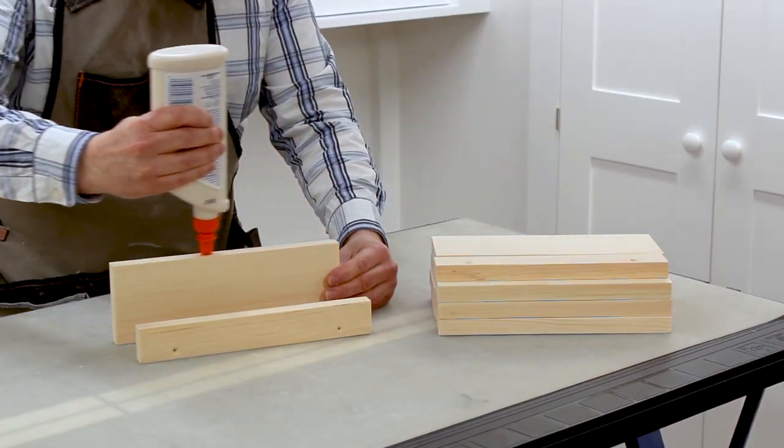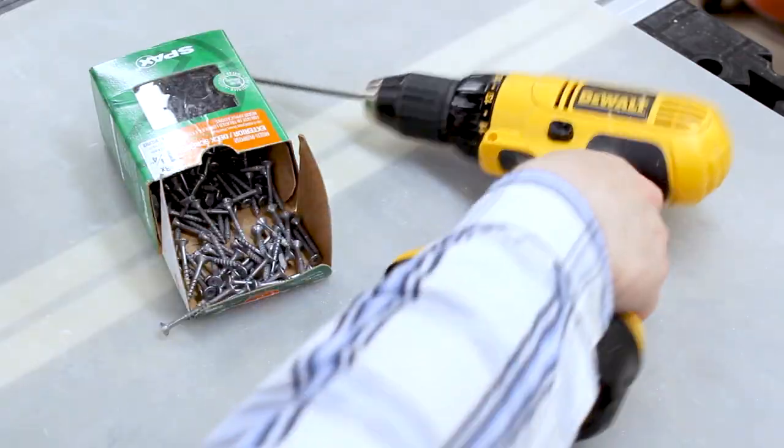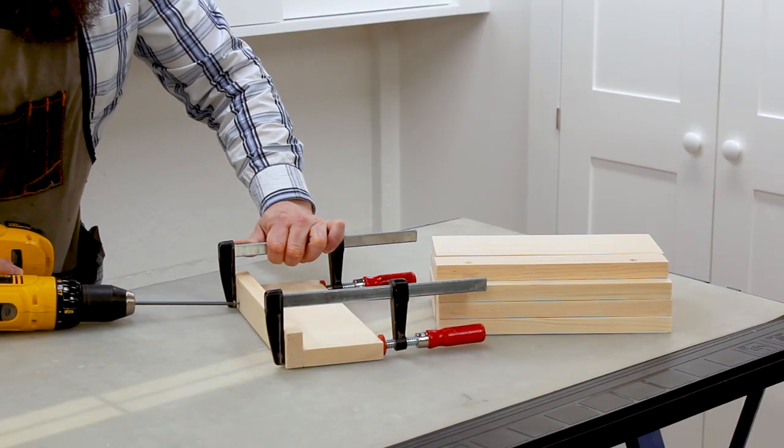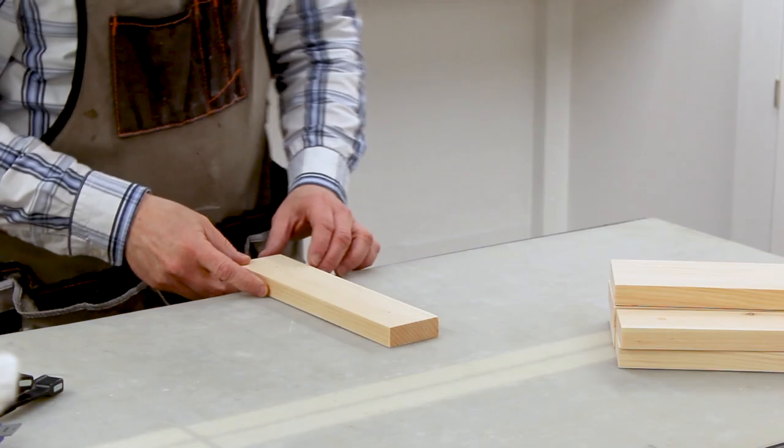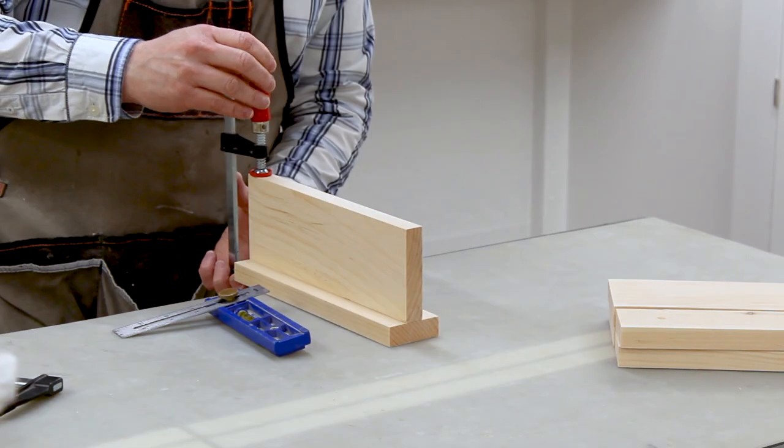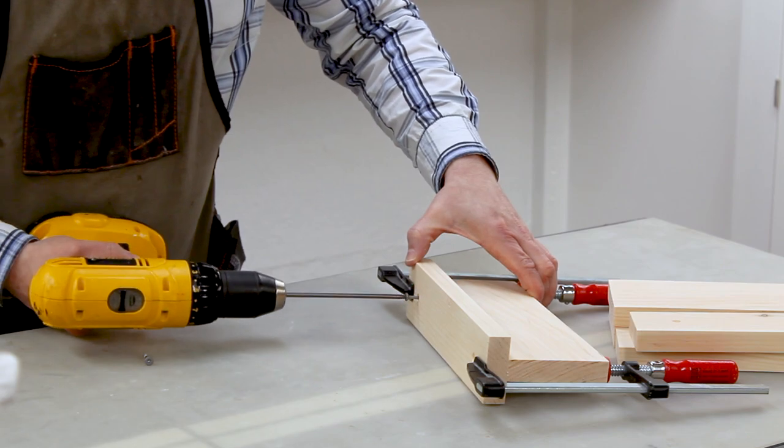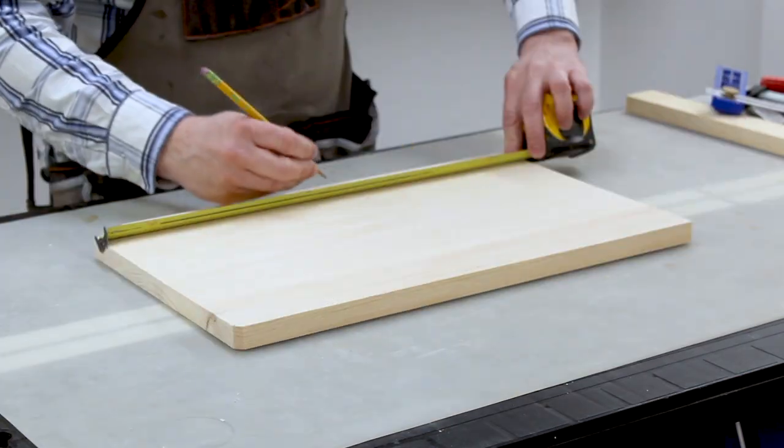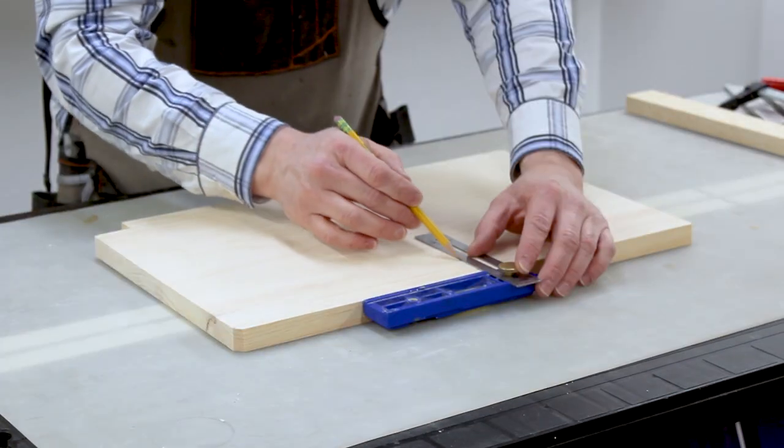The outside hangers were attached to the vertical pieces with a little glue and 1 and a quarter inch screws. For the inside hangers, I used my multi mark to center the vertical pieces on the horizontal pieces.